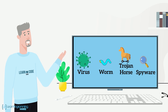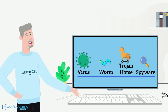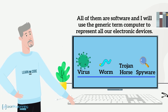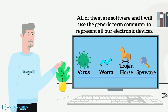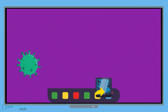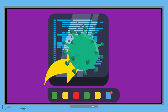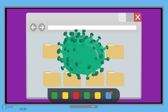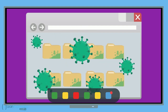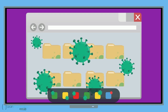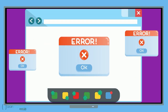Here's my very short explanation of each of these malwares. All of them are software, and I'll use the generic term computer to represent all our electronic devices. A virus infects a computer much like a human virus infects a person, by inserting itself into an existing program or app that's already on our computer. When that app executes, the virus also executes and can do whatever its programming directs it to do — from just copying itself to other apps, to degrading the operating system's performance, to erasing data.